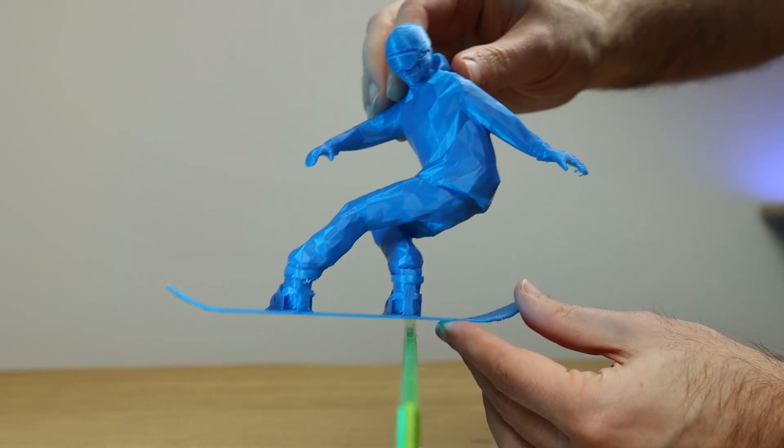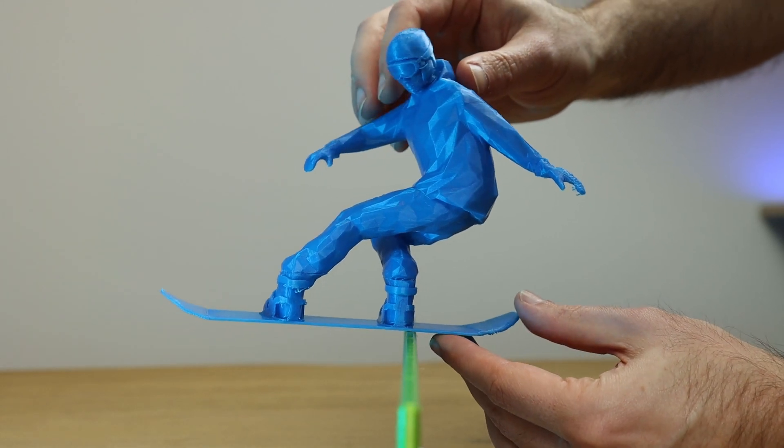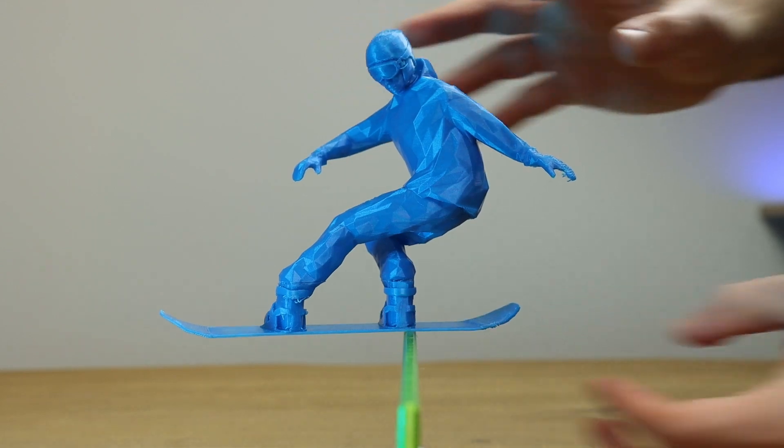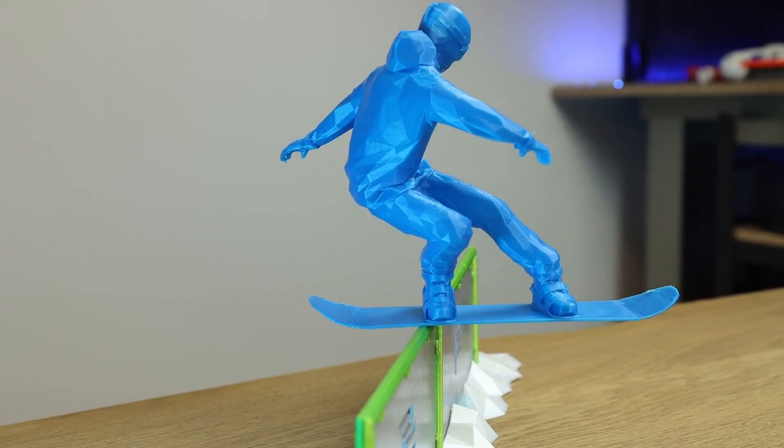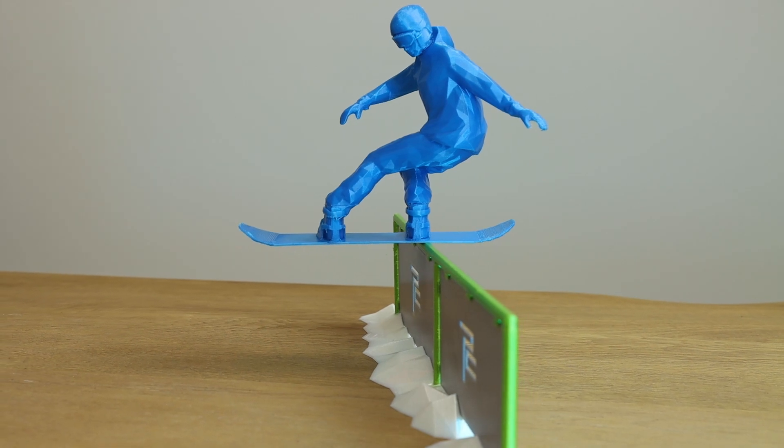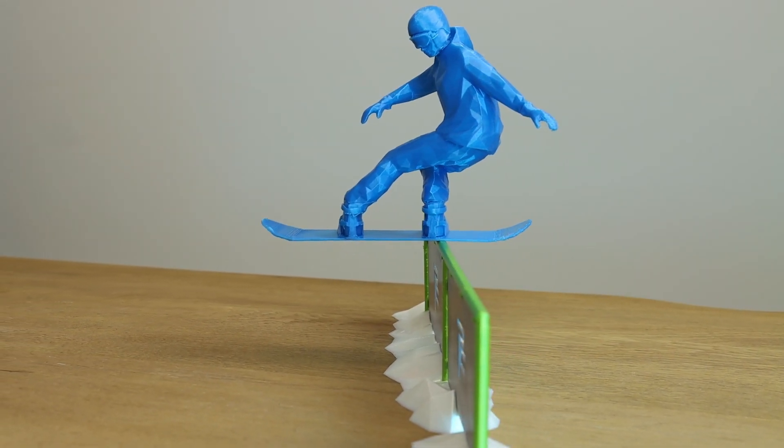And now finally we try to balance the snowboarder on the rail. Like this. Now all you need to do is make sure you don't bounce against the table. Guys, I hope you enjoyed this and I'll see you on the next one. Bye!